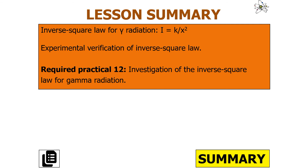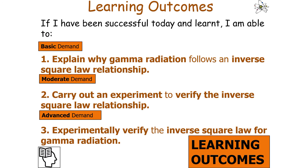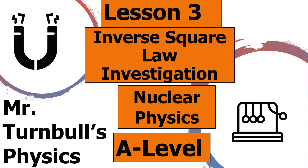To summarize: the inverse square law for gamma radiation is I = k / x², and we've looked at the experimental verification of this law through the investigation. If successful, we can explain why gamma radiation follows an inverse square law, carry out the experiment, and experimentally verify the result. Thank you very much for watching, and as always, have a lovely day.